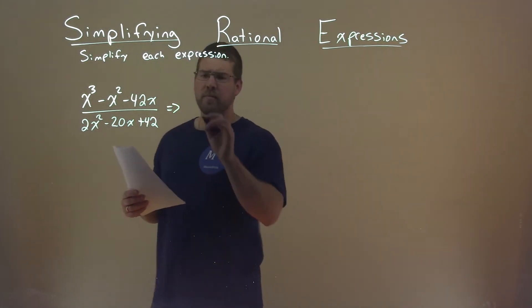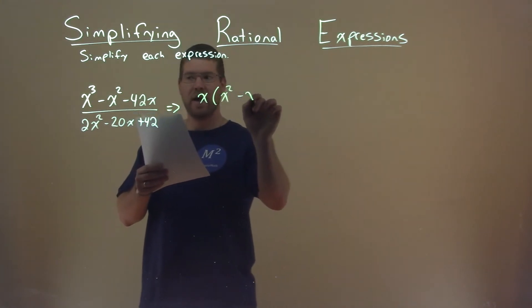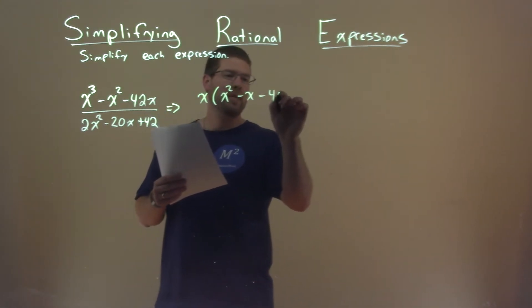The numerator, I know I can pull out an x from all parts, so if I do that, I'm left with x squared minus x minus 42.